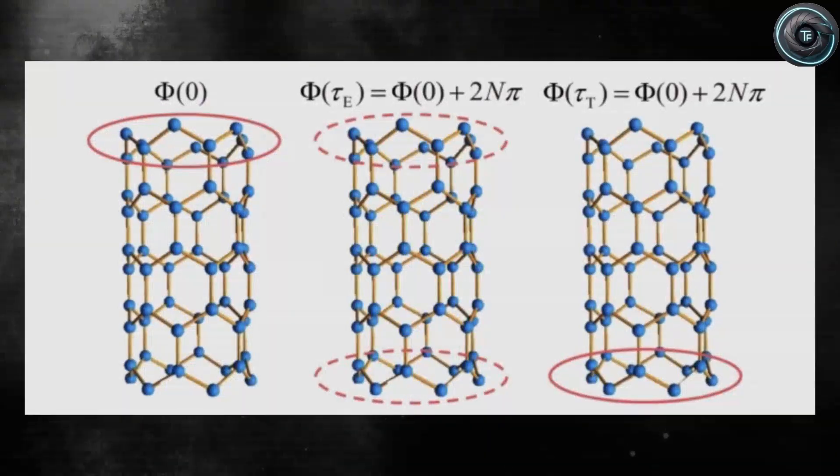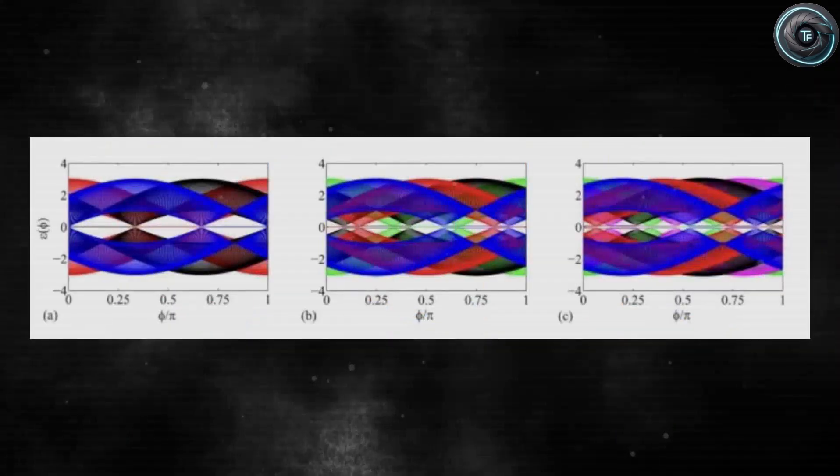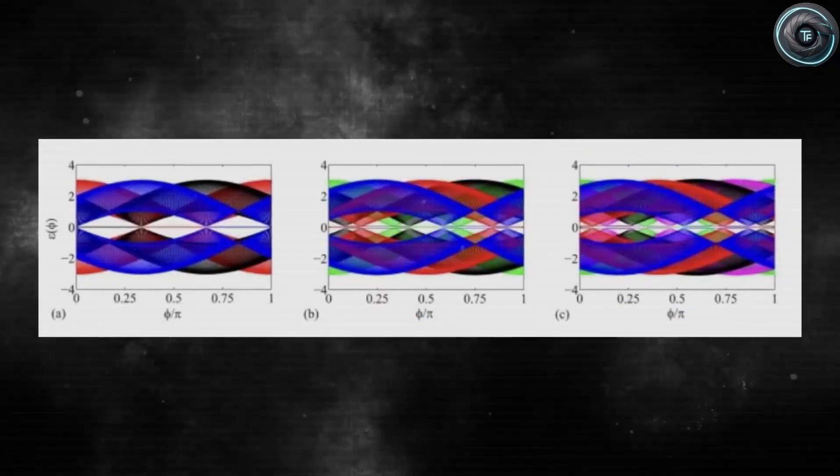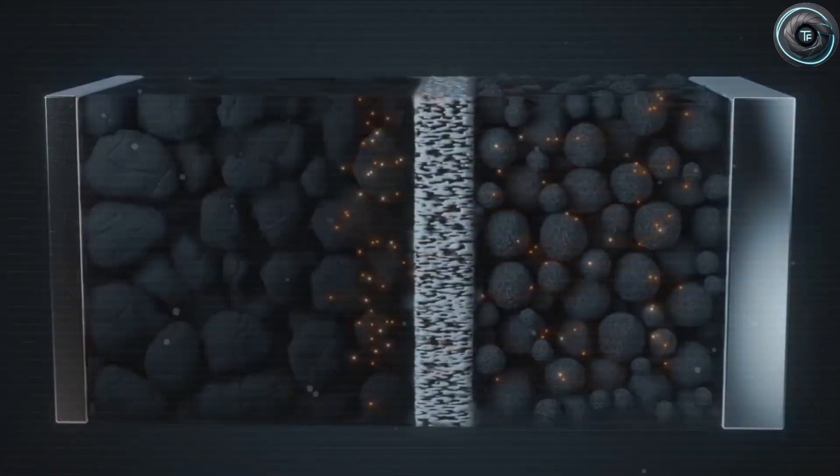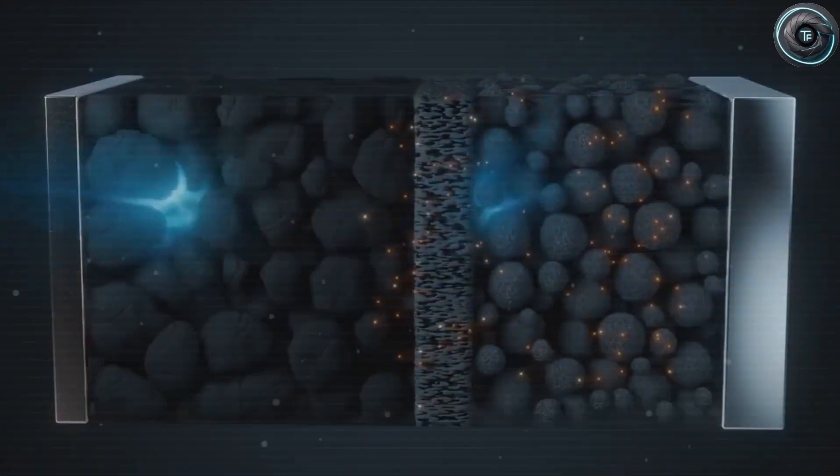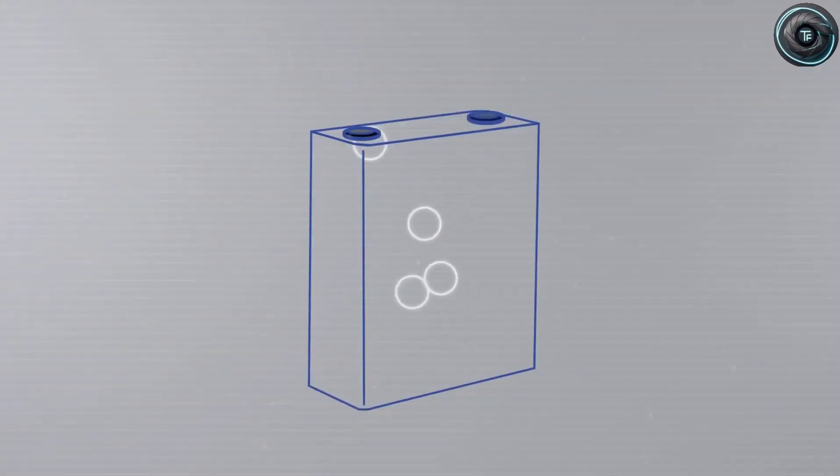But speed is only part of the story. The secret lies in how these batteries keep their cool. Lithium cells heat up fast under stress—push them hard and within 15 seconds their internal temperature can spike to 80 degrees Celsius. The management system then has to cut power to prevent overheating, and that's when your car slows down right when you need it to accelerate.